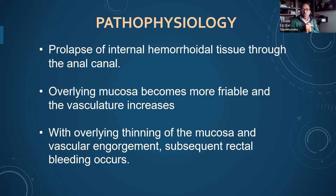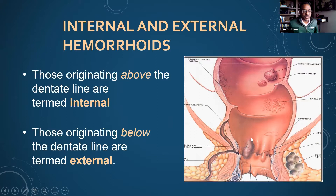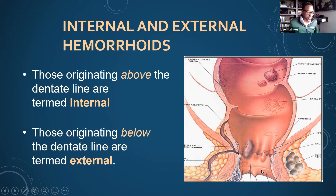This line here represents what we call the dentate line. Anything that originates above the dentate line represents internal hemorrhoids; when it's below that, it represents external hemorrhoids. One key significant difference: hemorrhoids above the dentate line tend not to be in a very tender place — the nerve innervation above the dentate line is very sparse, so it's not as painful. When you have hemorrhoids or intervention below the dentate line, they can be very significantly painful, and we manage that appropriately in the way we treat external hemorrhoids.